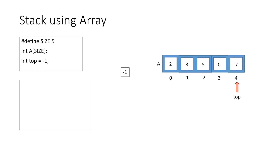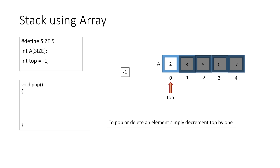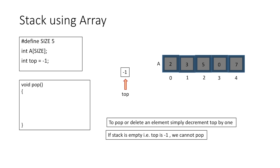Now let's see how we remove or pop an element. To delete an element we simply decrement top by 1. If we remove the topmost element 7, top decrements by 1, making element 0 (at index 3) the new top, and 7 is no longer part of the stack. Popping again removes element 0. After removing elements 5, 3, and finally 2, the stack is empty and top equals minus 1 — no further pop operations can be performed.